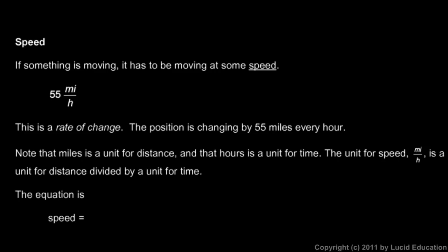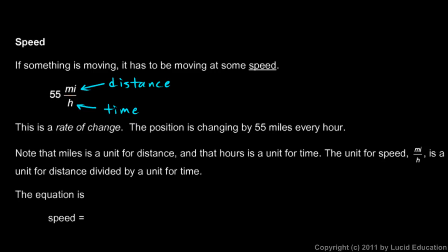Note that miles is a unit for distance — MI — that measures distance. And hours, the H there, is a unit for time. So the unit for speed, miles per hour, is a unit of distance over a unit of time. That fraction bar means divided by, so it's distance divided by time.